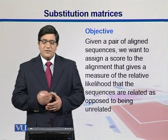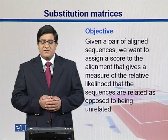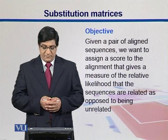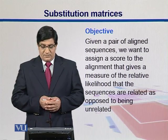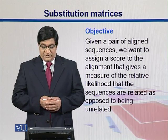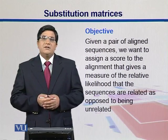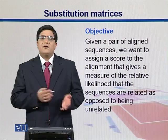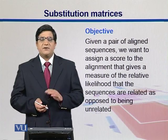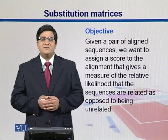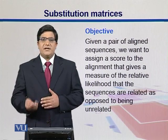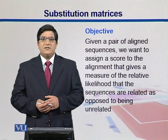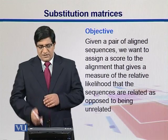What we want to do here is: given a pair of aligned sequences, we want to assign a score to the alignment that gives a measure of the relative likelihood that those two sequences are related, as opposed to being unrelated. So we are trying to estimate the likelihoods of sequences being related versus non-related, and then convert that into a score which we put into these matrices.